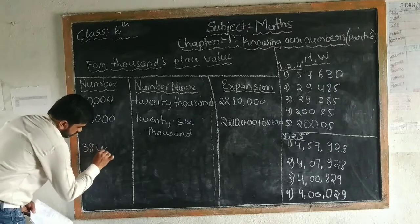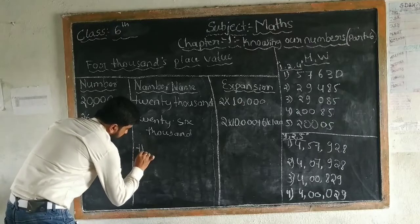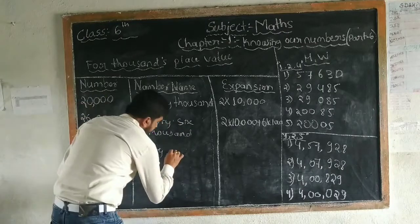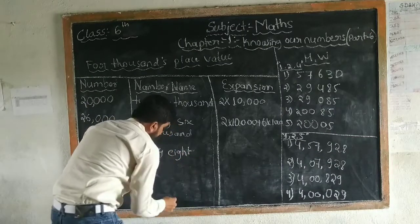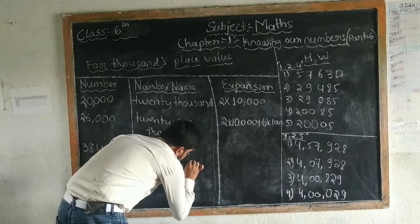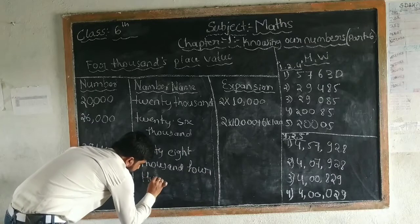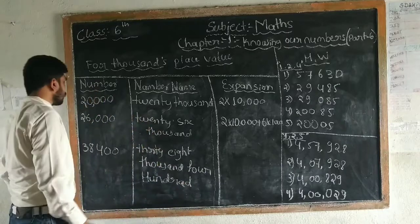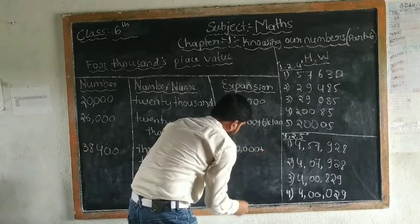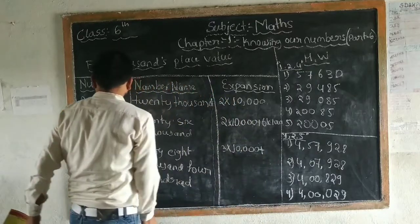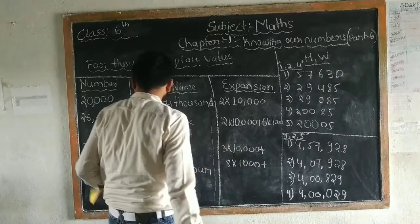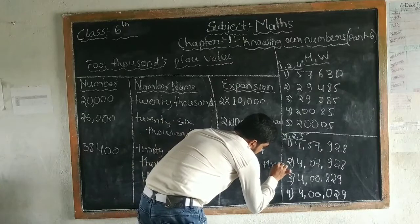Next one is 38,400. How can we expand this one? The first one is 3 into 10,000, plus 8 into 1,000, plus 4 into 100.